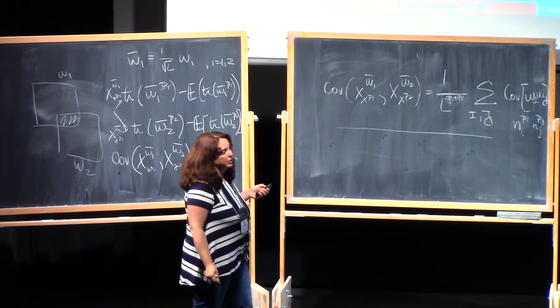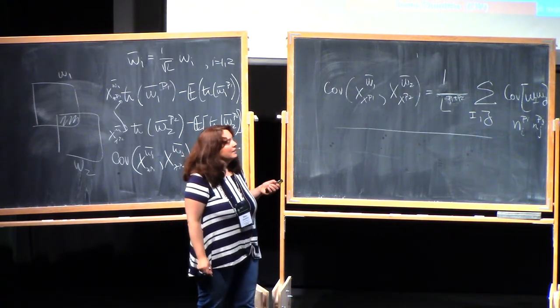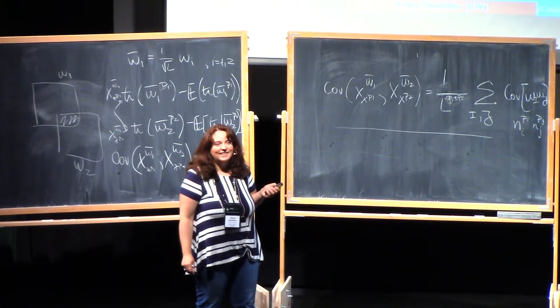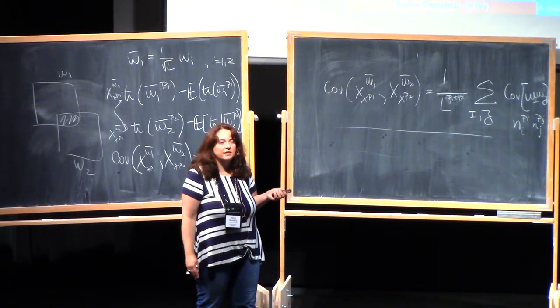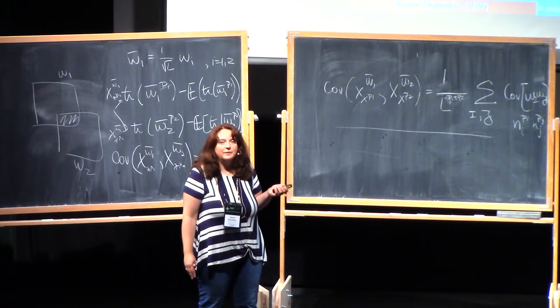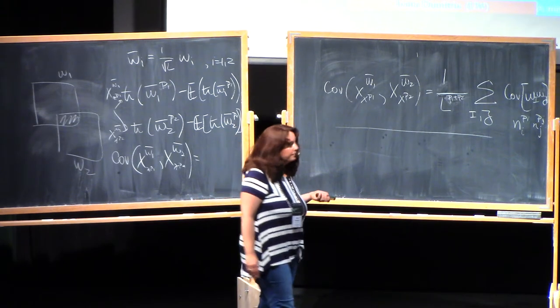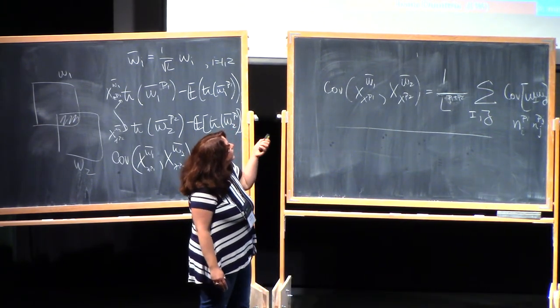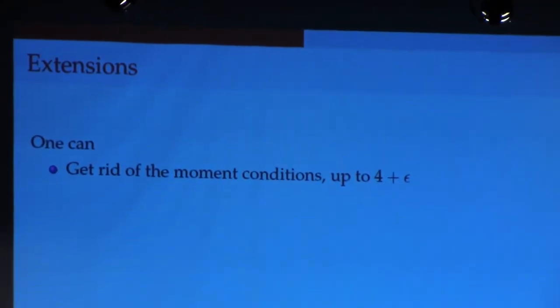I recommend reading Alexey Borodin's book on the CLT for, he calls it the CLT for Wigner minors. But essentially what it does is it defines and it establishes this Gaussian free field connection through the height function. Since I don't have much time left, I've covered this already. I want to talk a little bit about extensions.